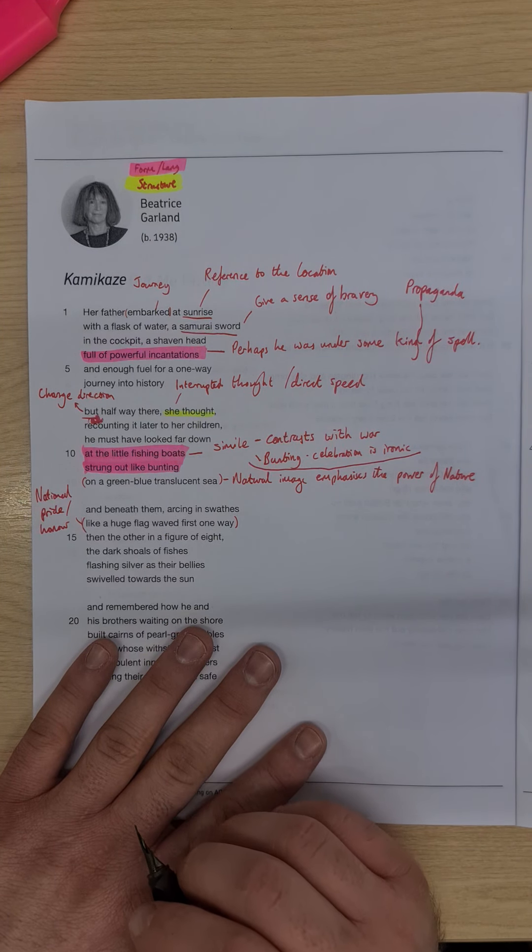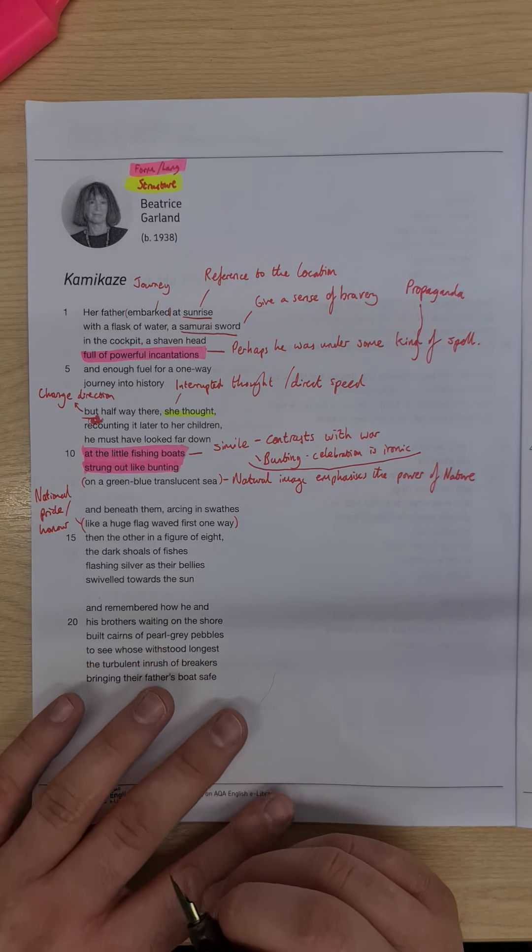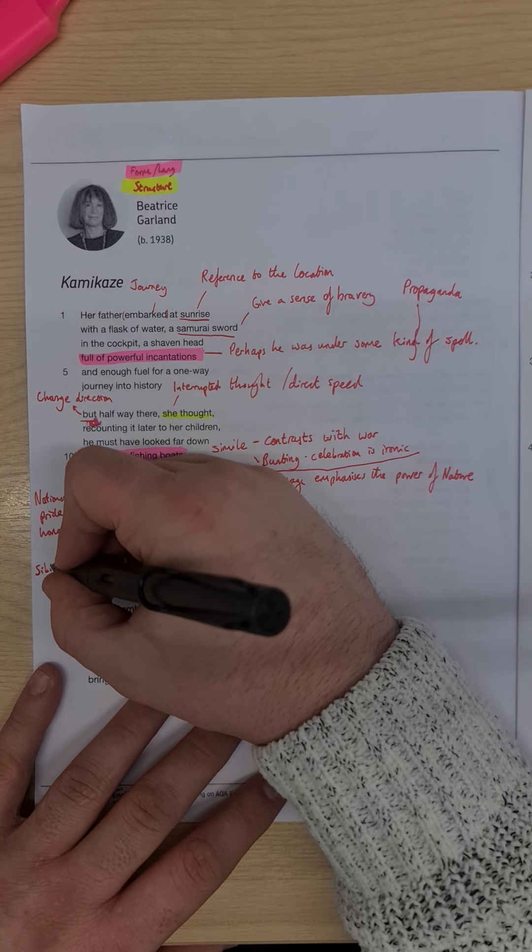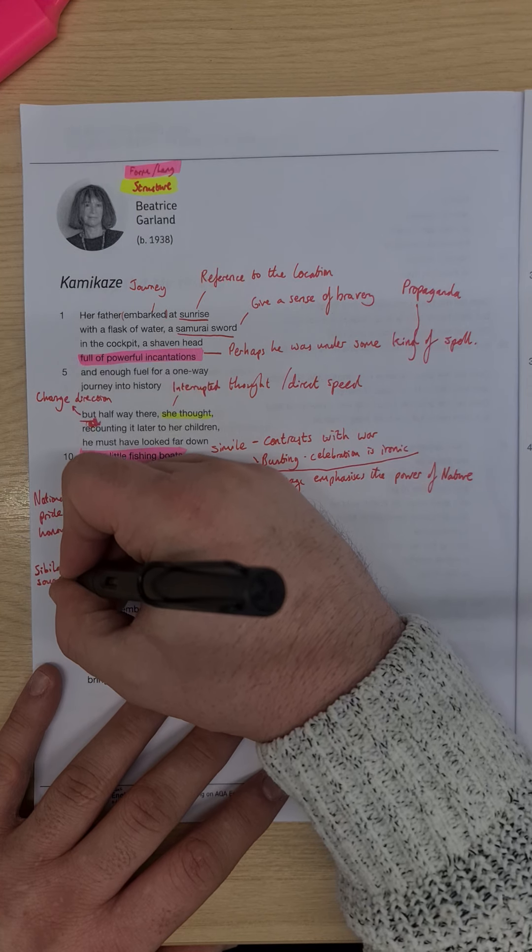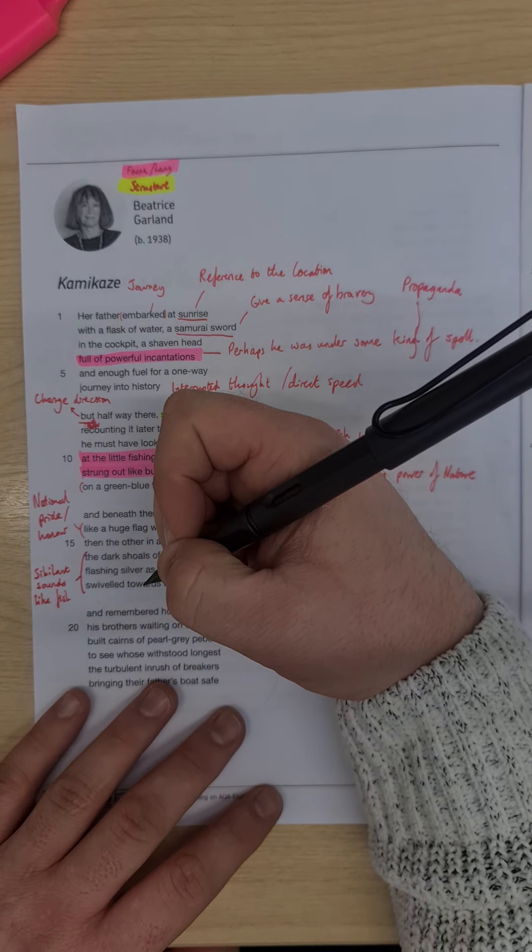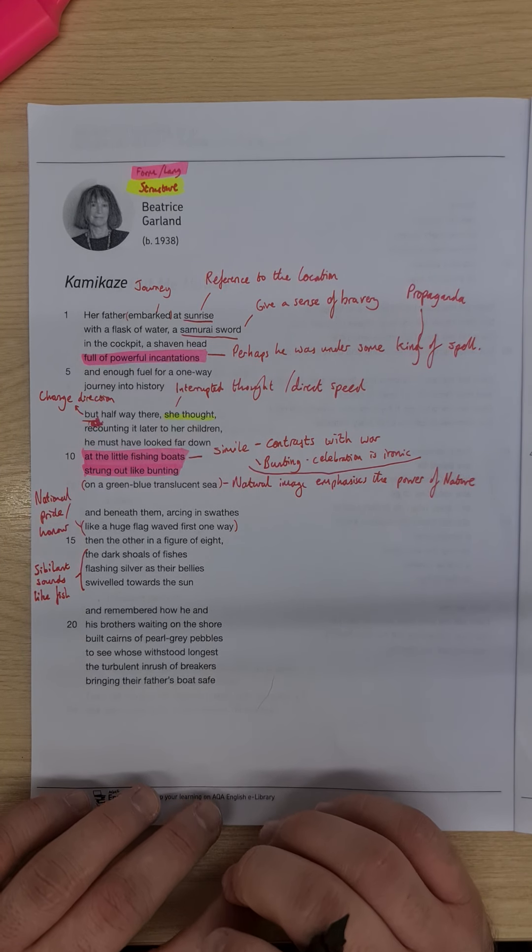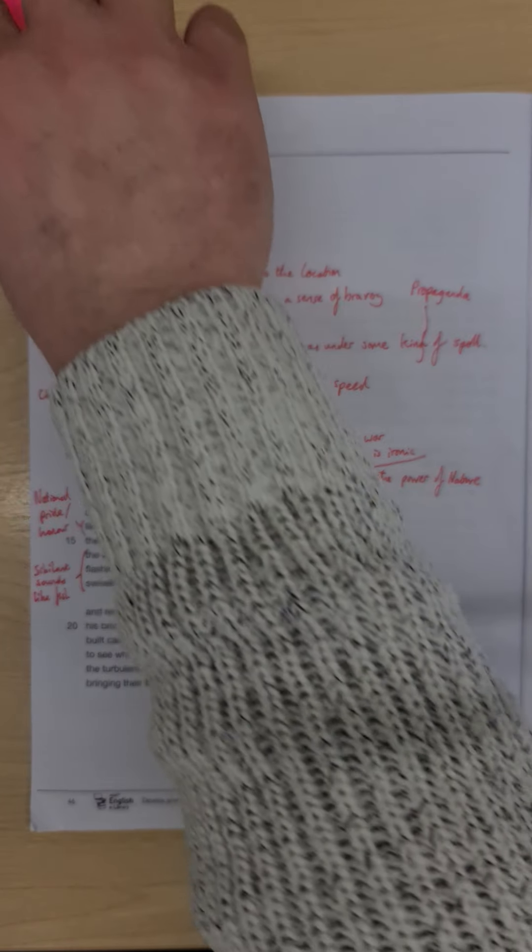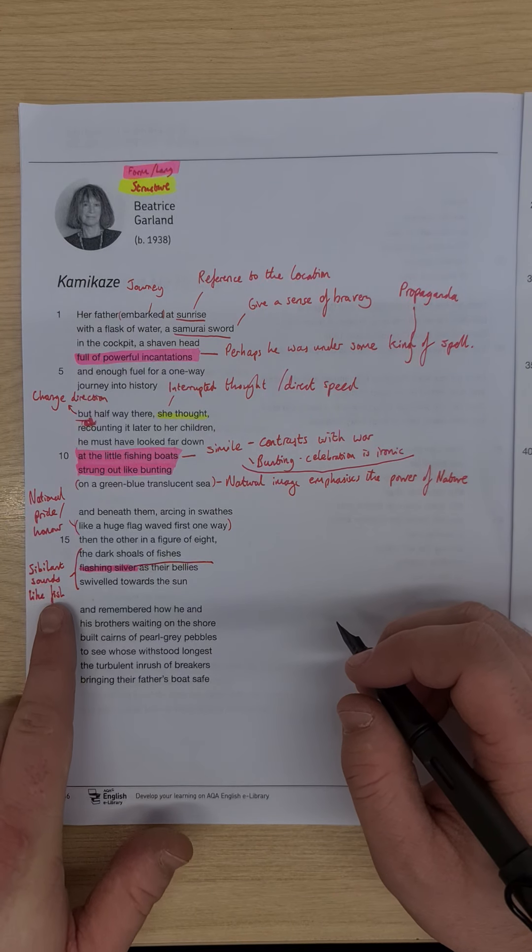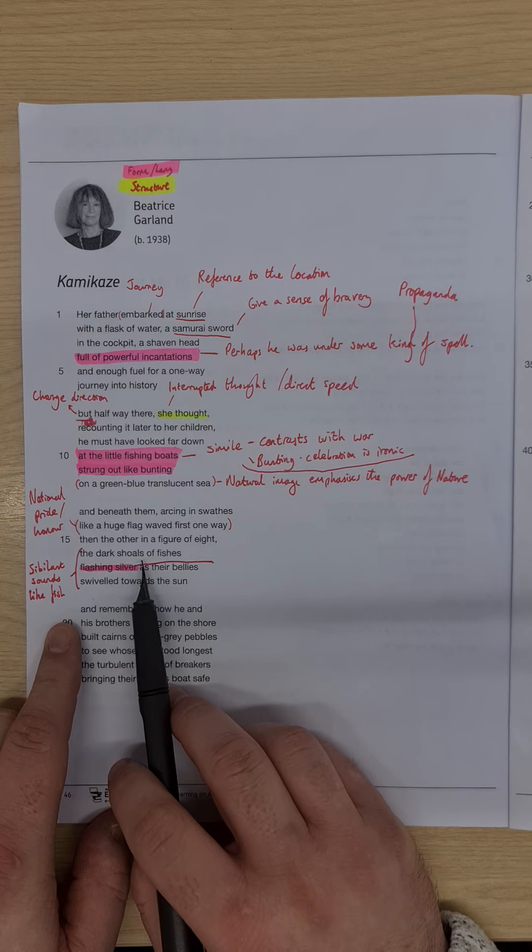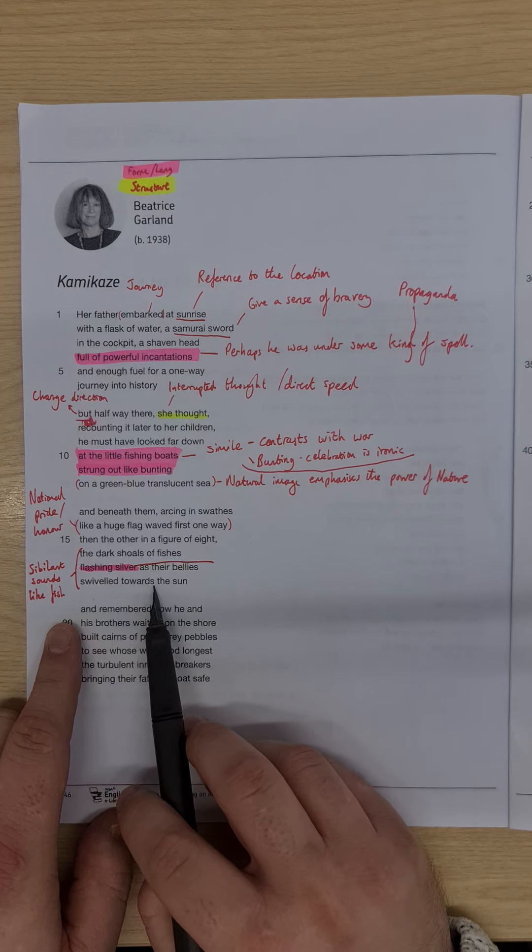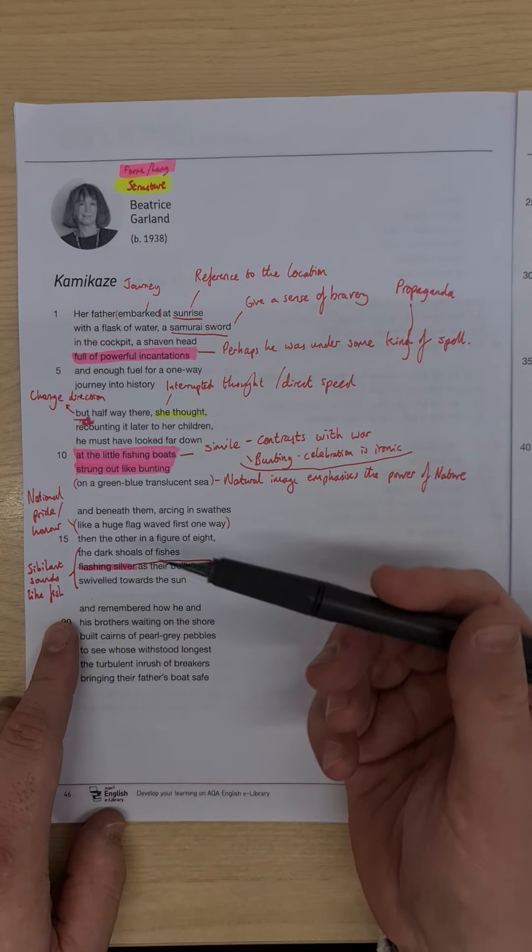Then the other in a figure of eight. The dark shoals of fishes as their bellies swivel towards the sun. Notice all of this sibilance here. So in this whole section here, we have the sibilant sounds. Reminders of the fishes and the fish movement in the sea. Sibilant sounds, by the way, just so you're aware, is any of the 'sh' sounds or the 's' sounds, anything related to an 's.' So the shoals of fishes flash in silver, as bellies swivelled towards the sun.